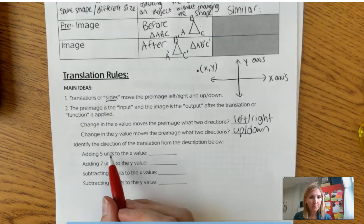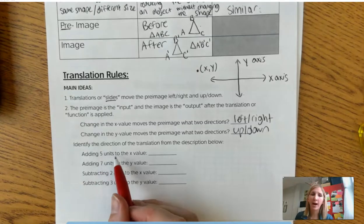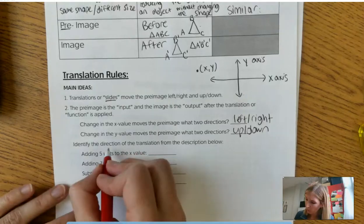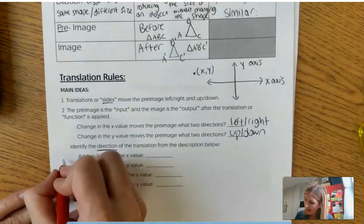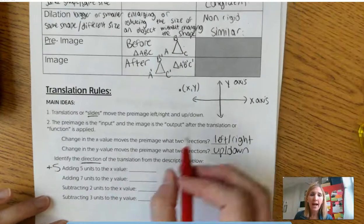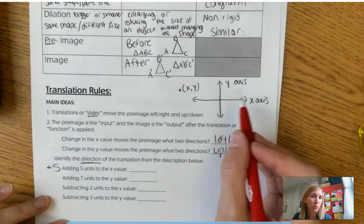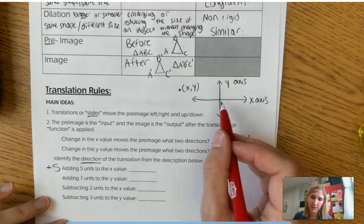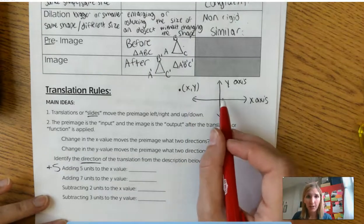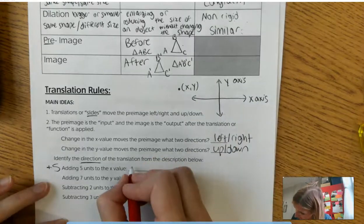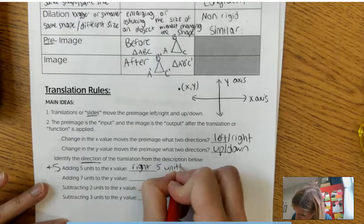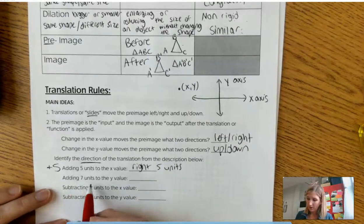Alright. Let's go ahead and look at some problems. So if I added five units to the x value, we've got to figure out what direction we're going, right? If I add five units to the x value, so if I'm adding on a number line, am I going to the right or am I going to the left? If I'm adding five units, I'm going to the right. So if I'm adding, I go right five units.